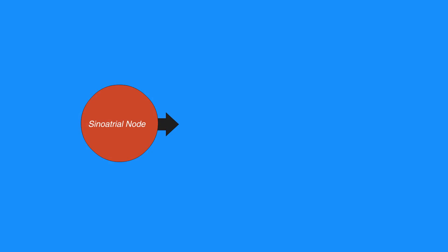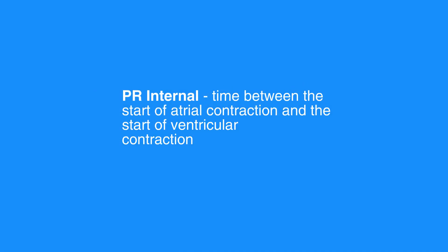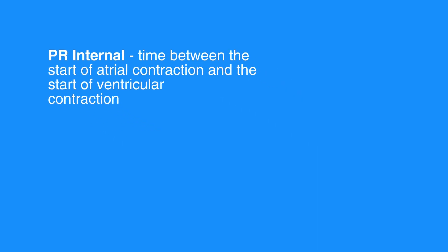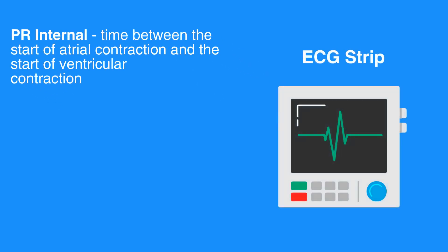This impulse then travels to the AV node, which in turn conducts the electrical impulse through the bundle of His, bundle branches, and the Purkinje fibers of the ventricles, causing ventricular contraction. The time between the start of the atrial contraction and the start of ventricular contraction registers as the PR interval on an ECG strip. The ventricular contraction registers as the QRS complex.